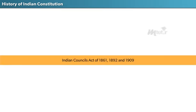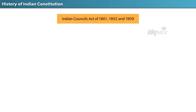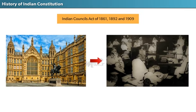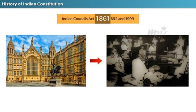Next, we have the Indian Councils Acts of 1861, 1892, and 1909. After the Great Revolt of 1857, the British government felt the necessity of seeking the cooperation of Indians in the administration of their country — that's exactly the reason behind these Indian Council Acts. Among these three, the Indian Councils Act of 1861 is considered an important landmark in the constitutional and political history of India.